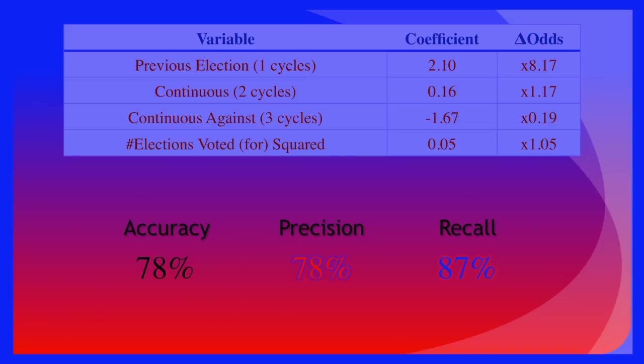Continuously voting against the political party currently in office also has a significant impact. States that voted against said party in the previous three or more election cycles are five times less likely to vote for the incumbent party. This is significantly more impactful than states that voted consistently with the party currently in office, which are only 17% more likely to vote for incumbent parties again. Although states that voted for political parties currently in office only once or twice in the past five election cycles are only slightly more likely than not to vote for them again, they become exponentially more likely to vote for said parties the more consistently they have voted historically.